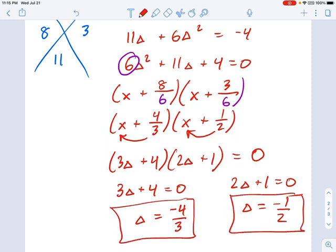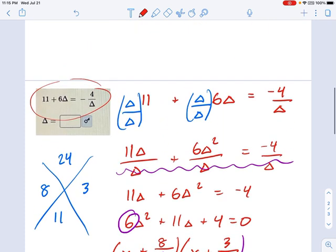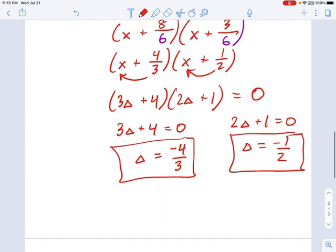Now, are we done? No. Remember, we need to always check for domain restrictions. So what's the domain restriction in this guy? Well, I only see one fraction with a variable on the bottom. So from this guy, I can see that delta cannot be 0. That's my domain restriction. Because if delta equals 0, then the whole equation blows up and goes to infinity. Now, are these answers 0? They're not. So they're both good. I have two solutions to this equation.